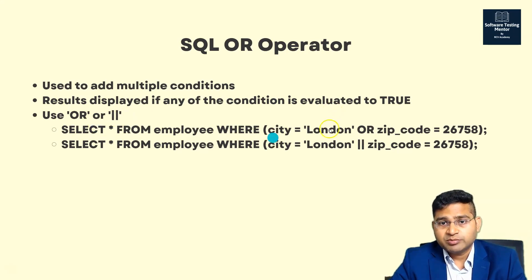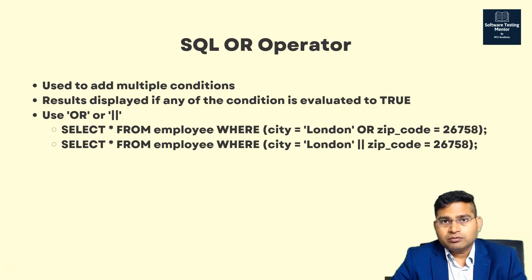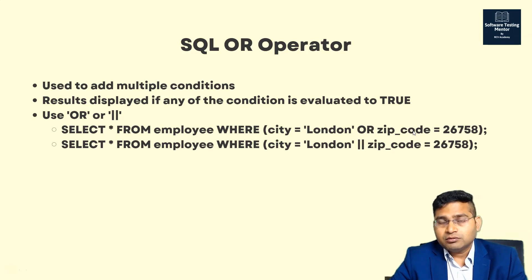For example, city is equal to London OR zip code equals a value. With the OR operator, if any condition returns true, the row is displayed. Like the apple/mango analogy: if one side has pineapple but the other has mango, and you said apple OR mango, the mango side evaluates to true. So the overall condition evaluates as true and the values are returned.